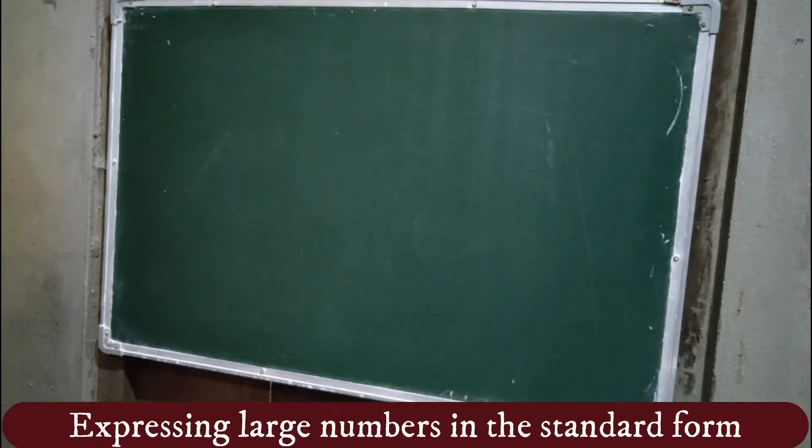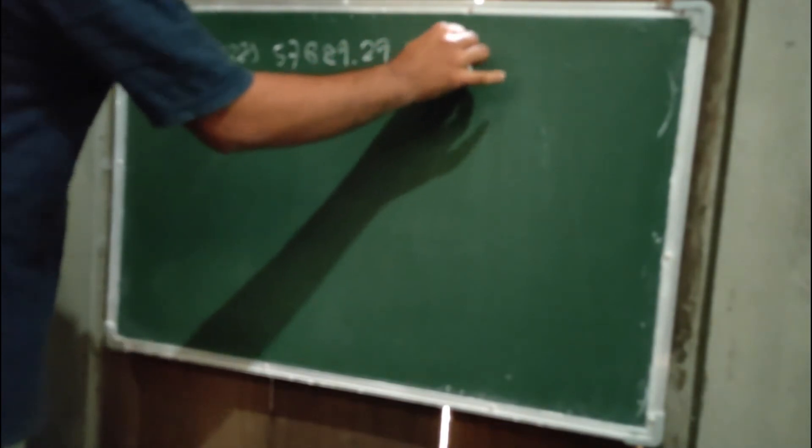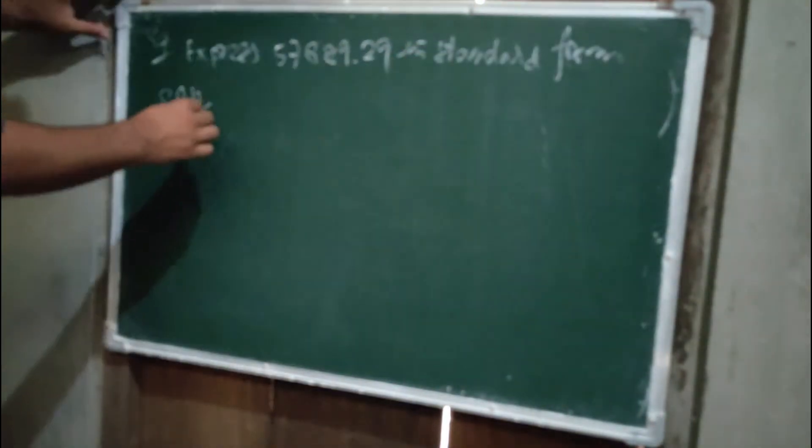Today we'll discuss expressing large numbers in standard form. First of all, we'll discuss some examples. Express 57689.29 in standard form. This is very easy.